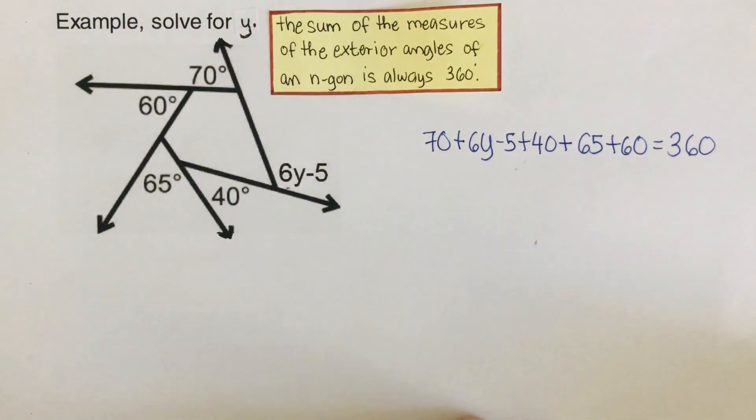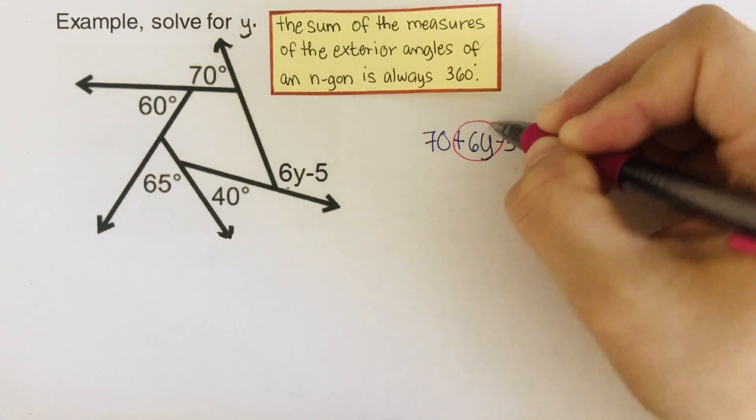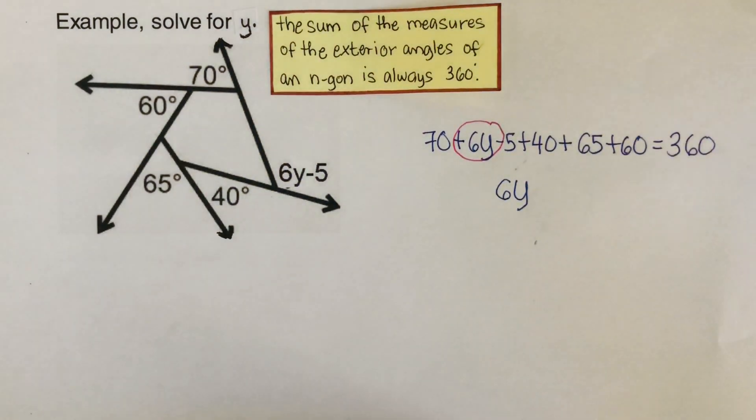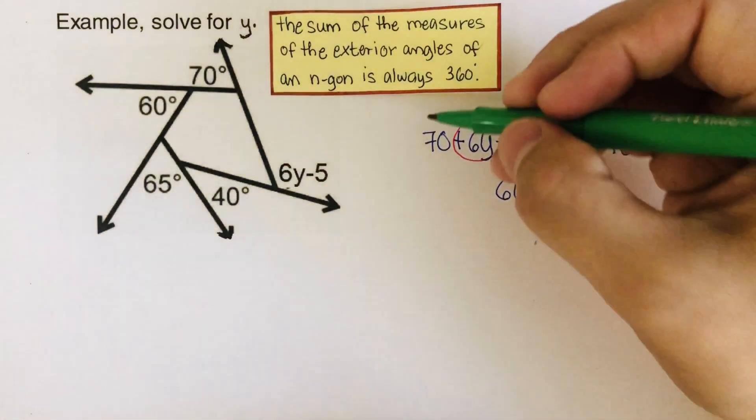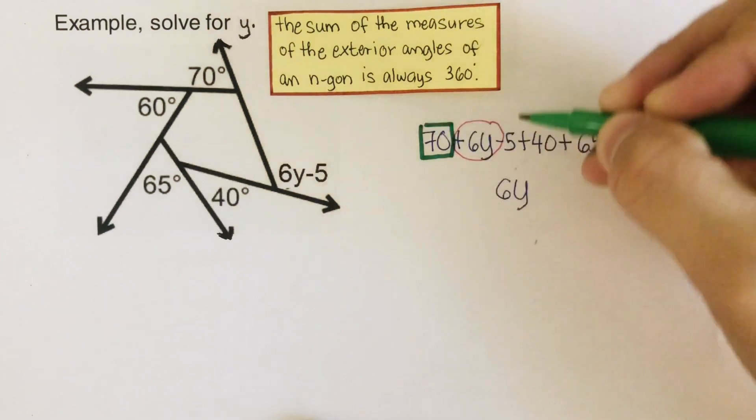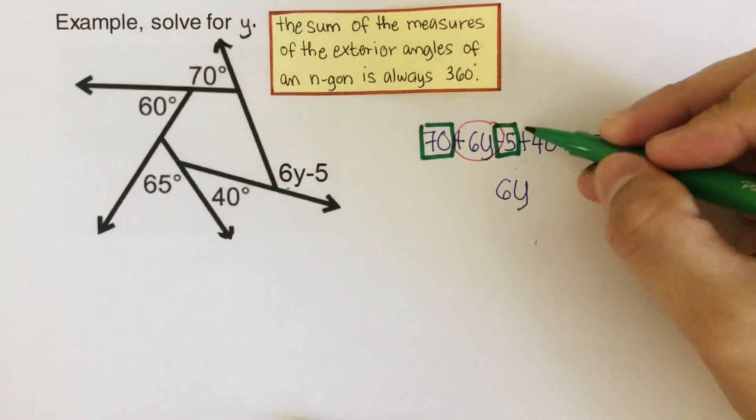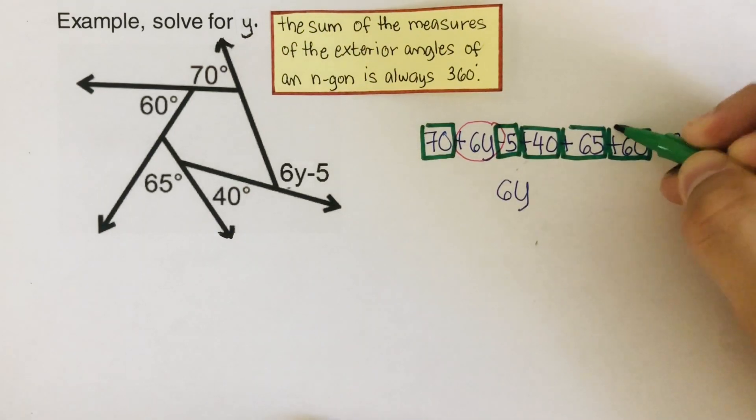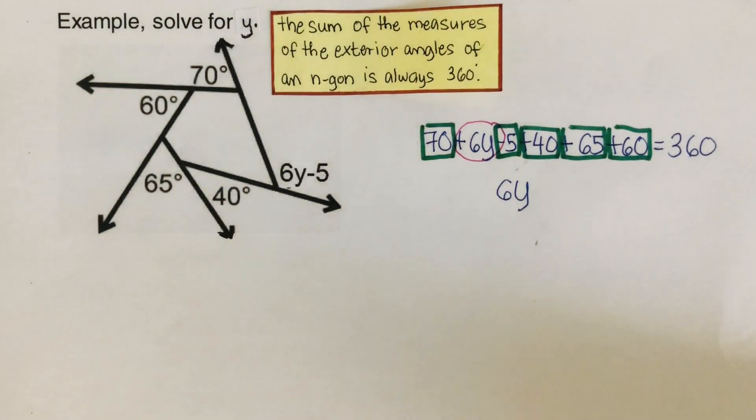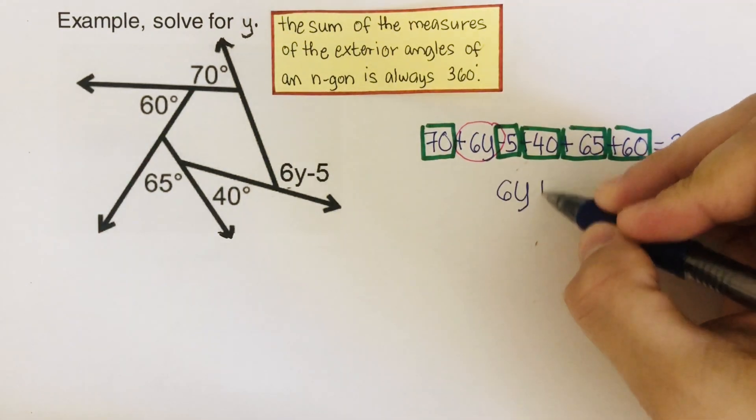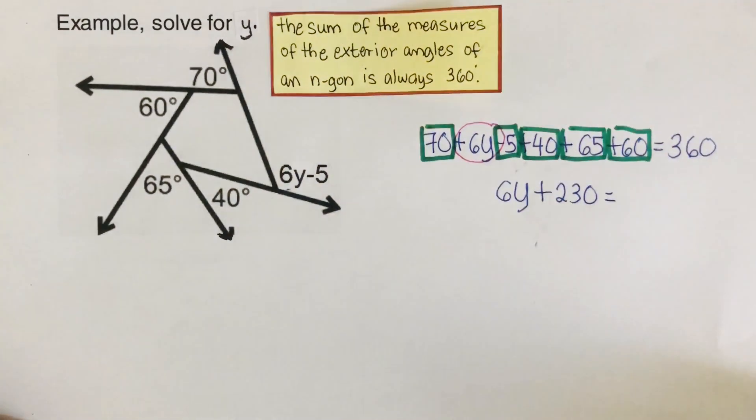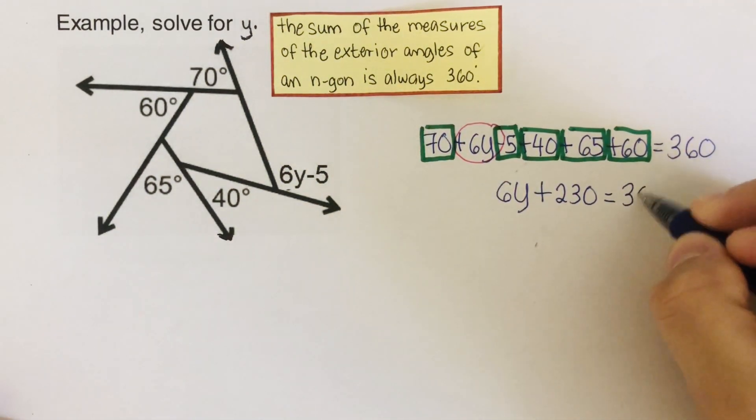So then from here, we combine like terms. We only have one variable here, which is 6y. And then we add all the constants: 70 minus 5 plus 40 plus 65 plus 60, which comes out to 230. So 6y plus 230 equals 360.